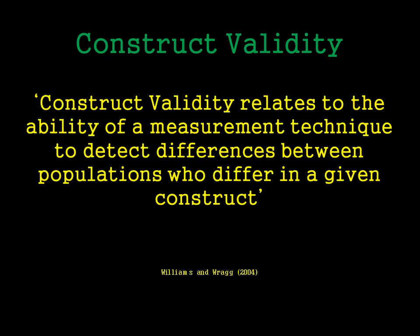The definition of construct validity is really trying to identify that if we've got a population who differ in a construct, our test should be able to tell the difference between the two. In this particular example, our construct is happiness, and so we should be able to find a test that can differentiate between people that are happy and people that aren't happy.